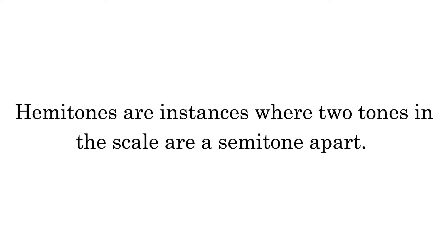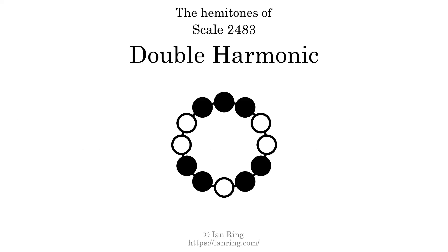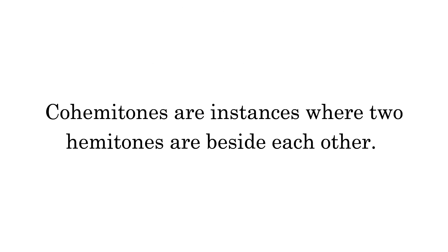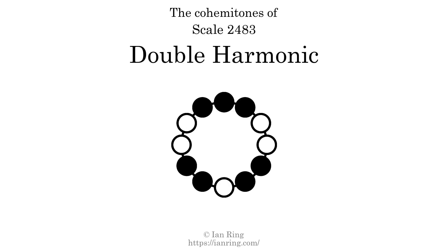Hammertones are instances where two tones in the scale are a semitone apart. This scale has four hammertones at marked positions. Co-hammertones are instances where two hammertones are beside each other. This scale has one co-hammertone.